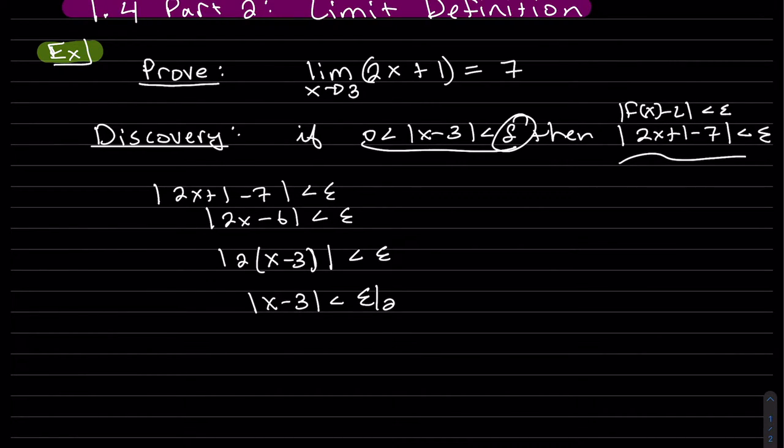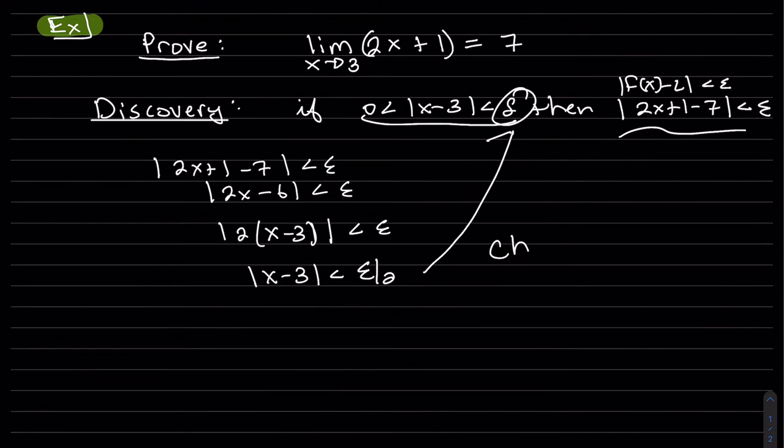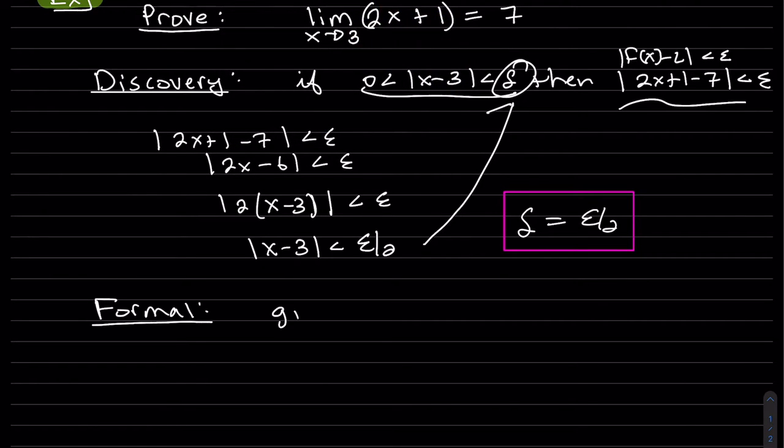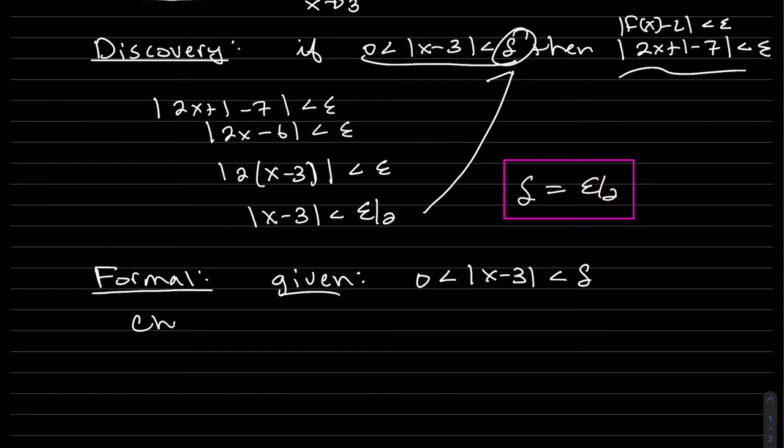That 2 can come outside and divide. So it looks like we have our delta. Now our formal proof. We write out our given, and we're going to choose another given. Our delta is equal to epsilon over 2, and that's given. It has a corresponding epsilon.